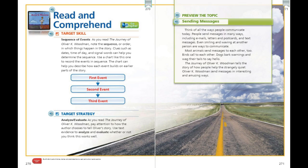Authors sometimes tell their stories by including letters written by one or more characters in the story. They might use this method to give the reader a chance to analyze and better understand the character's thoughts or feelings. When you analyze, you think deeply about a story and whether it's a good strategy to use. We also evaluate when we read — we consider everything that we have analyzed and come to a decision about whether or not the story works well.